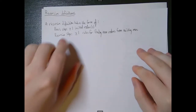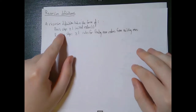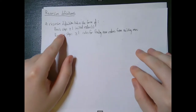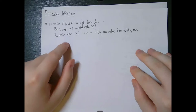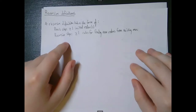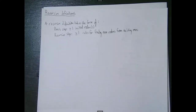A recursive definition basically takes the form of some sort of basis step, which is something — at least one initial value if not more — and a recursive step, which is at least one rule, if not more than one rule, for finding new values from existing ones.